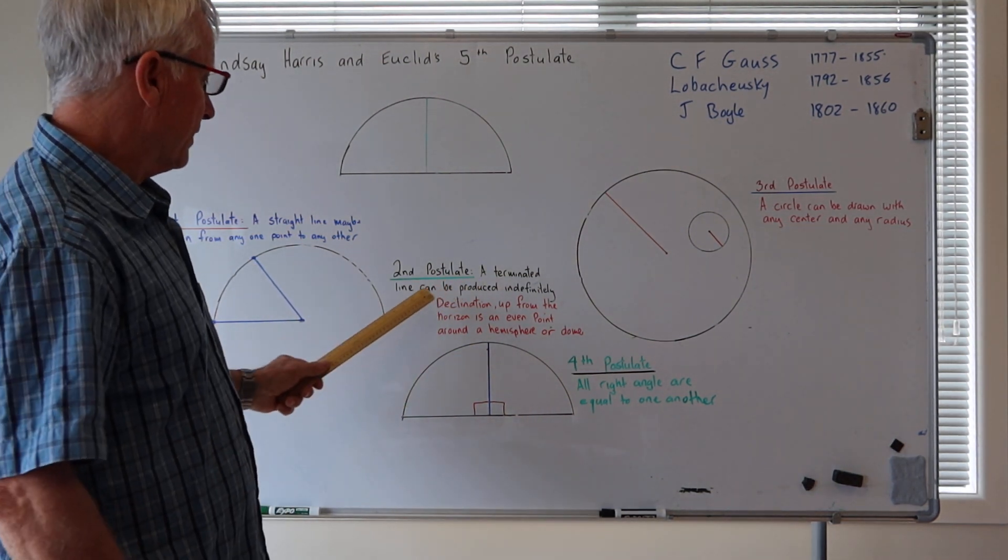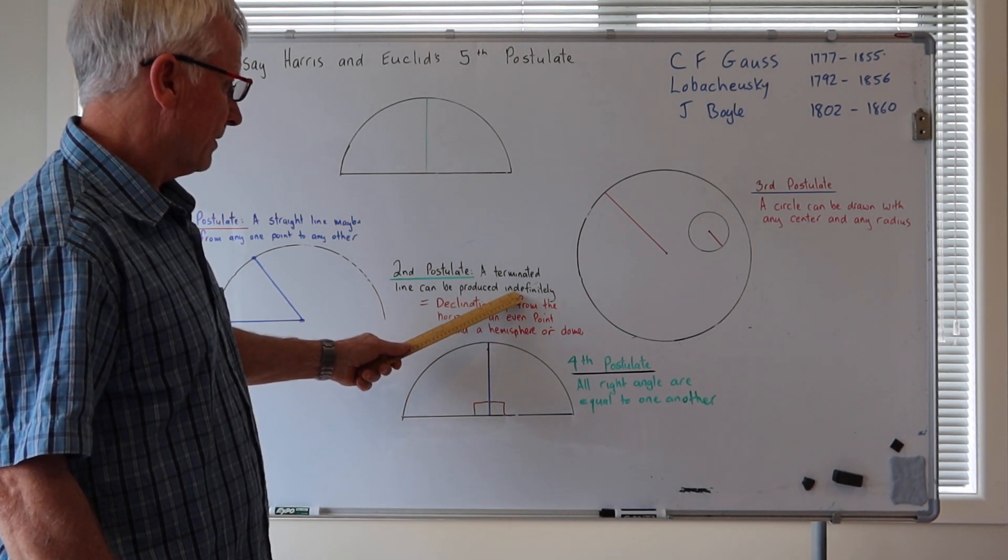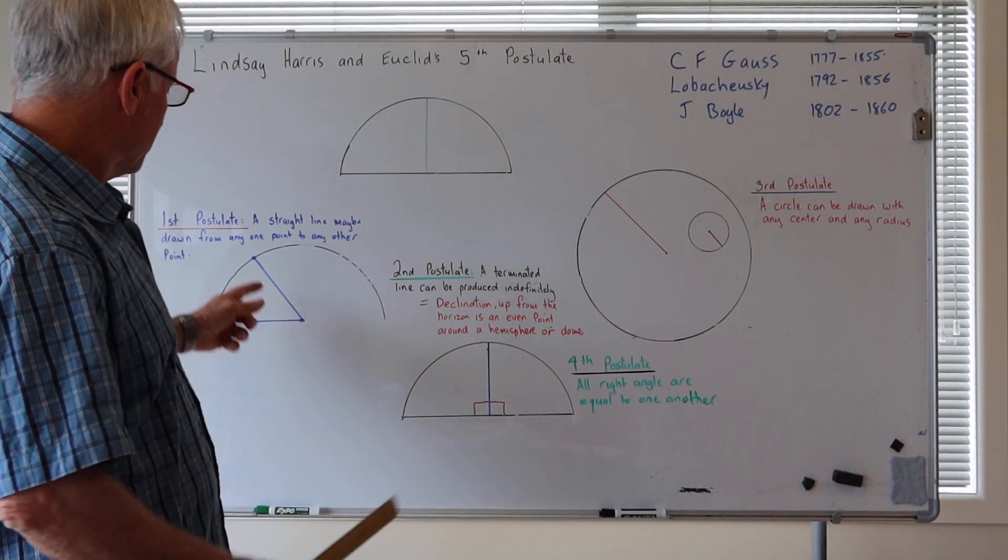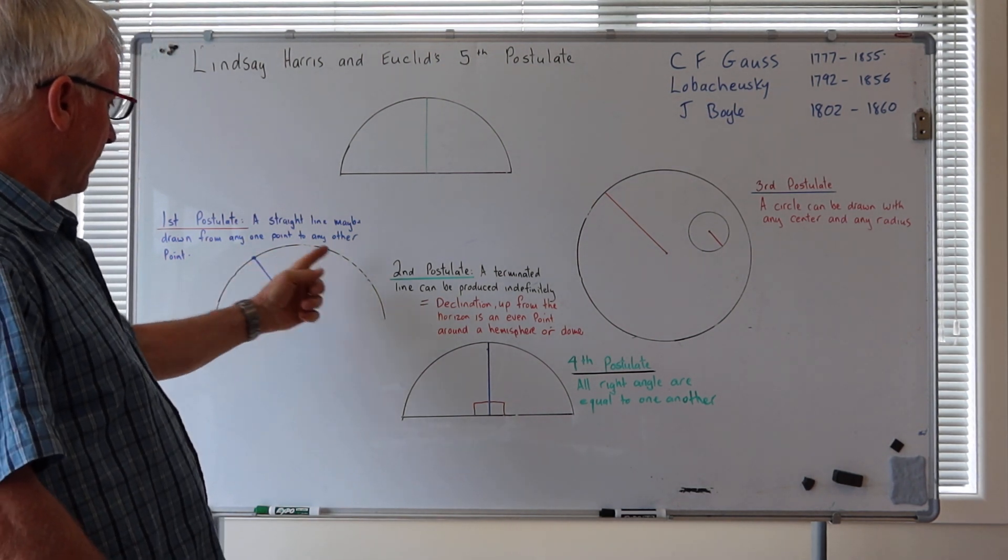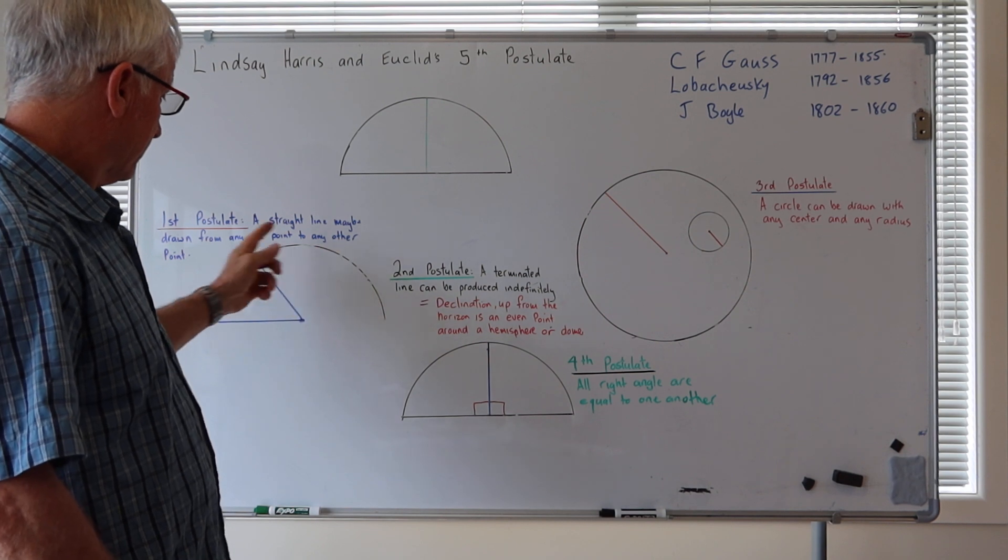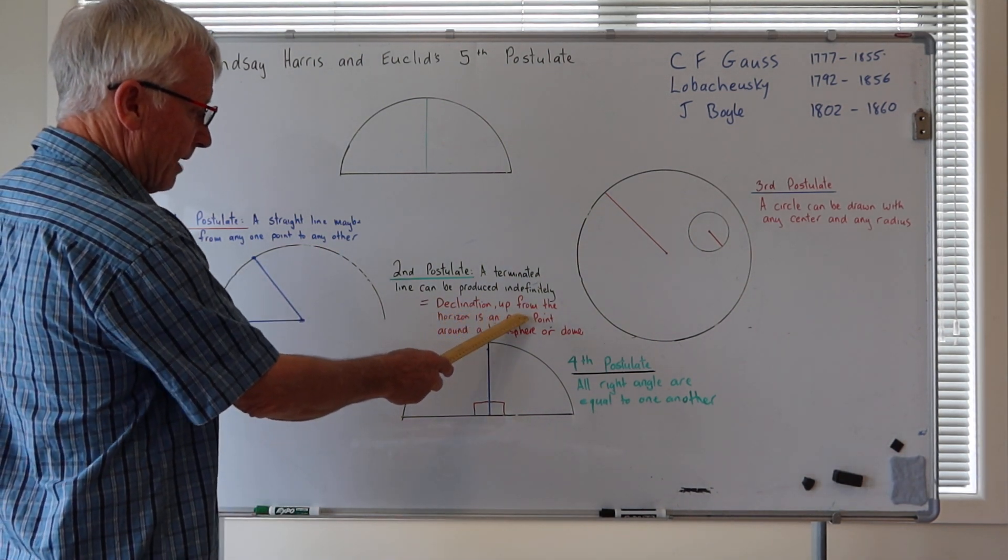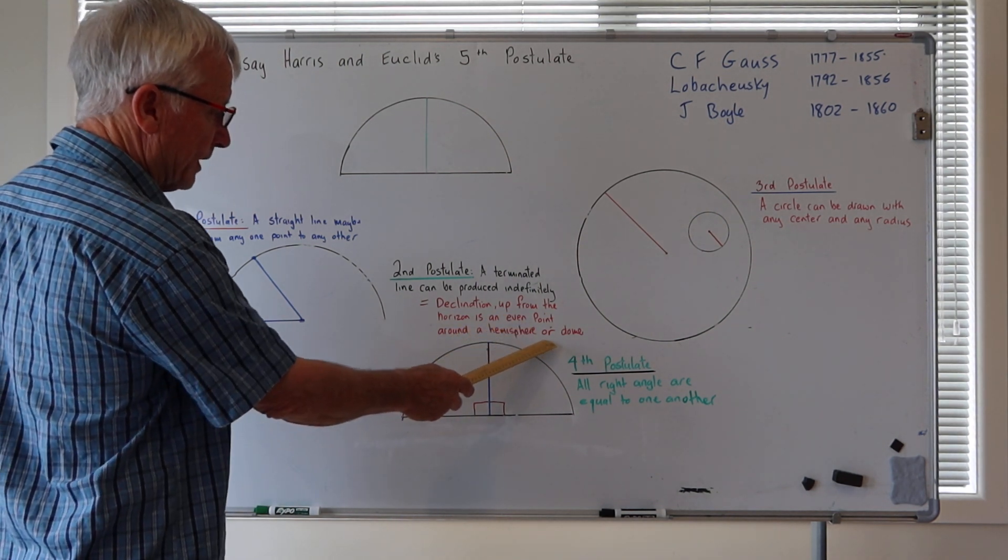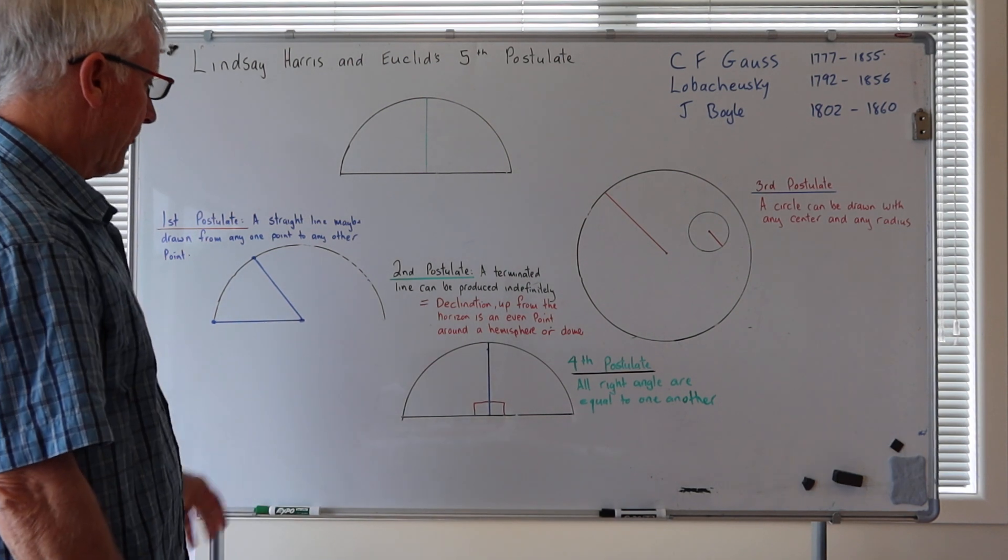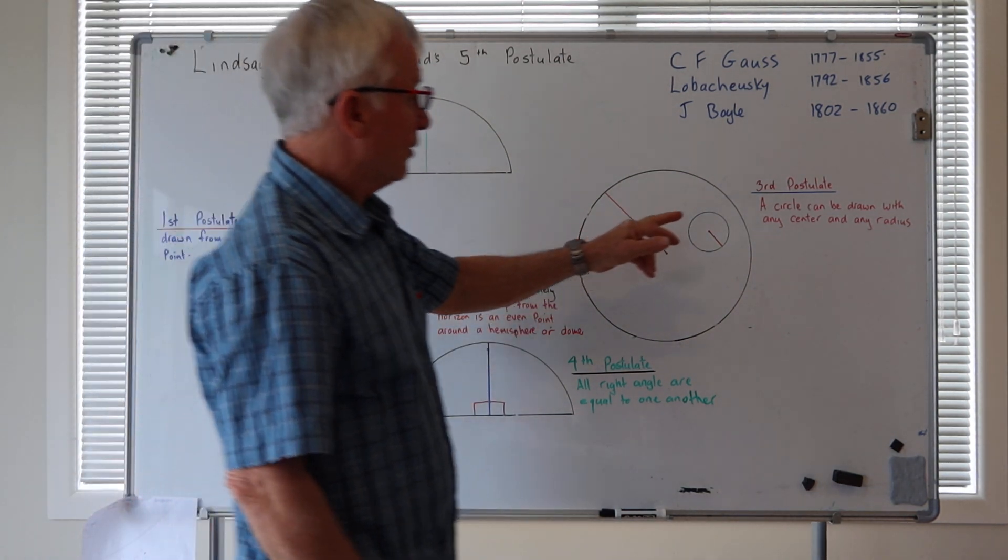Second postulate: a terminated line can be produced indefinitely. In other words, this point here can swing around and be equal anywhere around this hemisphere, which is the declination up from the horizon as an even point around a hemisphere or a dome. This is what leads us into the fifth postulate.